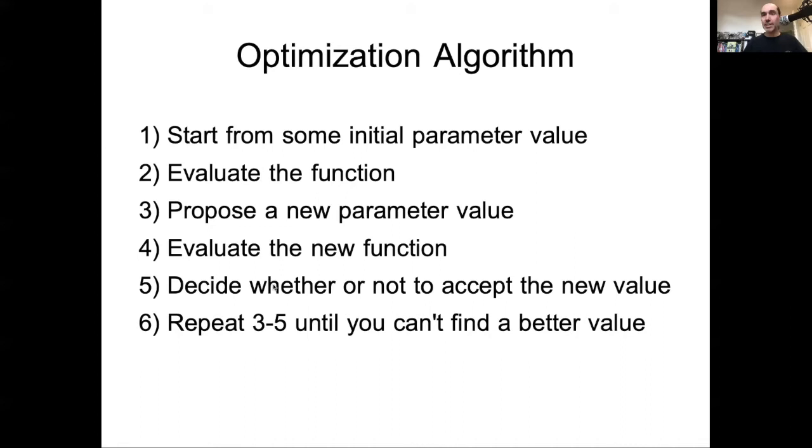So we have some criteria for deciding whether or not to accept the value. And then we repeat this step of proposing a new value, evaluating it, and deciding whether to accept it or reject it. Propose a new value, evaluate it, accept or reject it, and we do that until we can't find a better value. That's what's called a stopping condition. So I'm going to dive in a little bit more detail specifically on the first step, where to start from, the third step, how to propose new values, the fifth, whether to accept or reject, and the sixth, how to know when you've found the best.